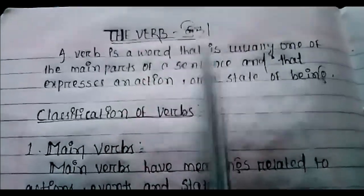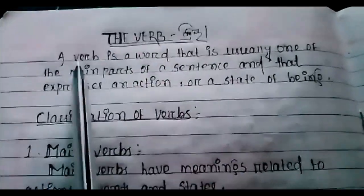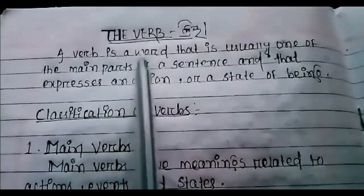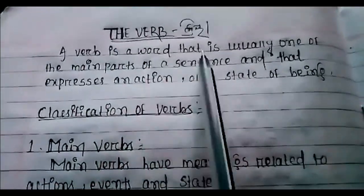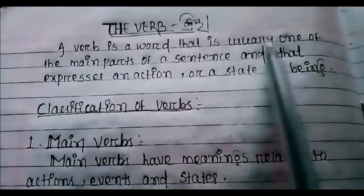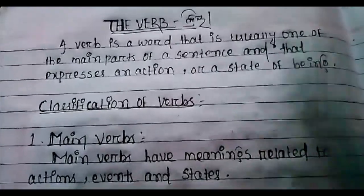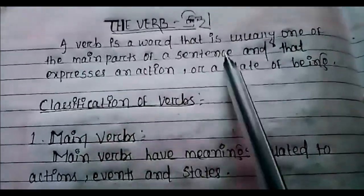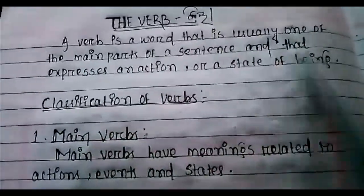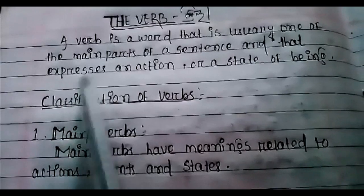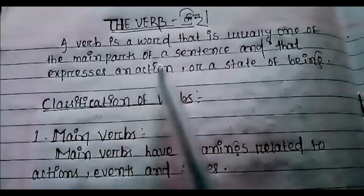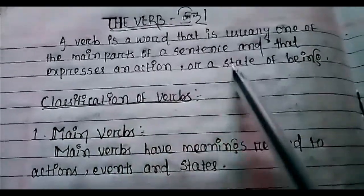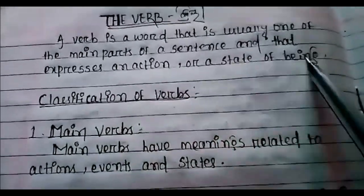Verb means kriya. The definition of a verb is a word that is usually one of the main parts of a sentence and that expresses an action or a state of being.